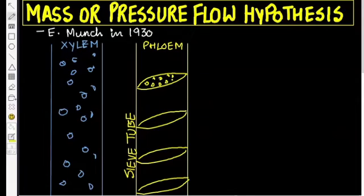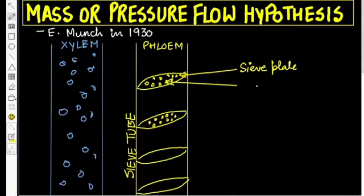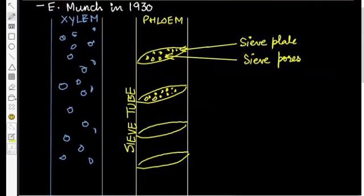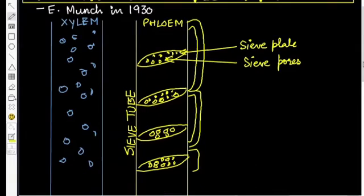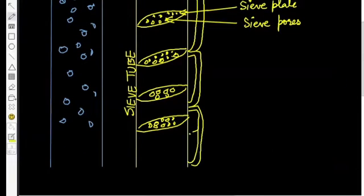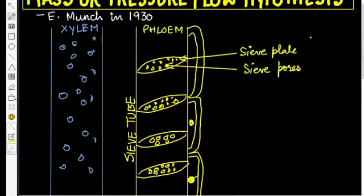The main cells responsible for food conduction are sieve tubes. This column you can see here is a sieve tube. Sieve tubes are formed by vertical alignment of small cells called sieve cells. Sieve cells are joined end to end by a perforated plate called a sieve plate. Sieve plates have numerous pores called sieve pores which permit the flow of food particles through them.